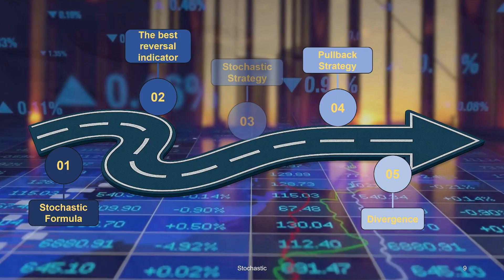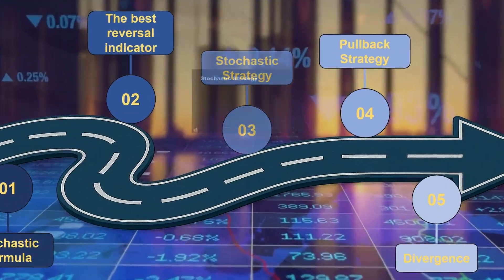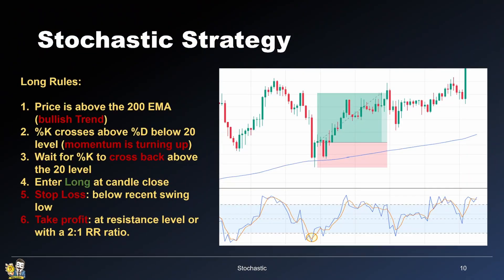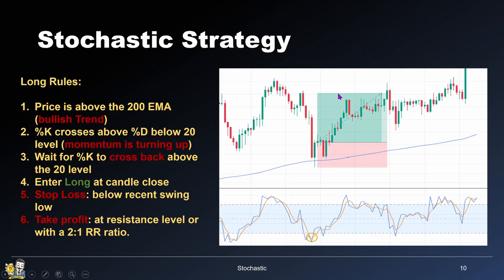Let's take a look at a stochastic strategy based solely on the indicator. Here's how the long setup works. First, the price is above the 200 EMA, which indicates a bullish trend, so we'll only be looking for long positions. Second, %K crosses above %D below the 20 level, suggesting that momentum is turning up. You then need to wait for %K to cross back above the 20 level. Once that happens, you can enter a long position at the candle close. For the stop loss, set it just below the recent swing low. And for the take profit, you can either target the last resistance level or use a 2-to-1 risk-reward ratio.